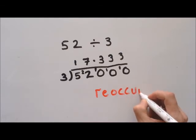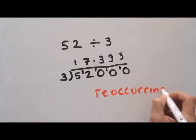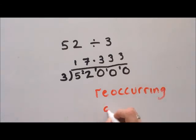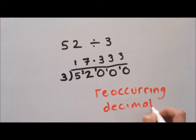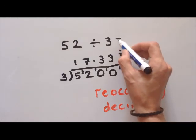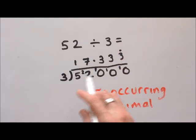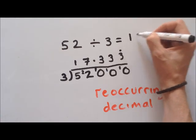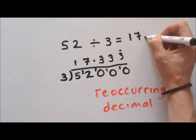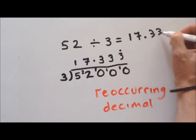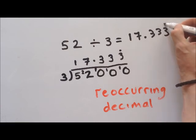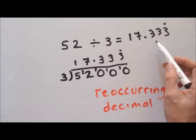This is what's called a recurring decimal. Once we know it's going to be recurring, we put a little dot above the repeating digit to let the reader know the decimal will go on forever. So our answer is 17.333... and we put our dot there to show the threes go on forever.